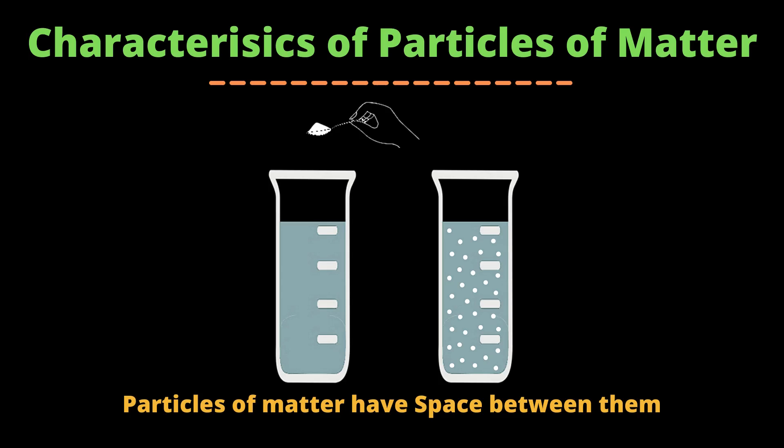There are some characteristics of particles of matter. The first characteristic is that particles of matter have space between them. To understand this, let's perform a test: add some salt or sugar to a glass of water and observe if you can see any change in the volume of water. We can observe that particles of sugar or salt get evenly distributed in water without changing the volume of water.